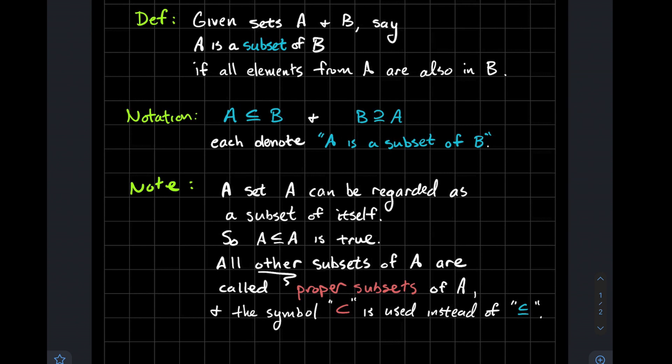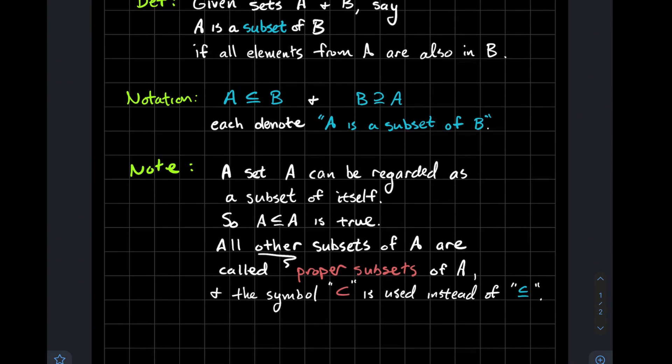You would use that similarly rounded subset symbol, but notice that there's no little bar beneath it. You can think of that bar underneath as like the possibility of an equal sign, or the possibility that the two sets might be equal. But if you take that little bar away, then you're indicating to someone that one is a proper subset of the other.